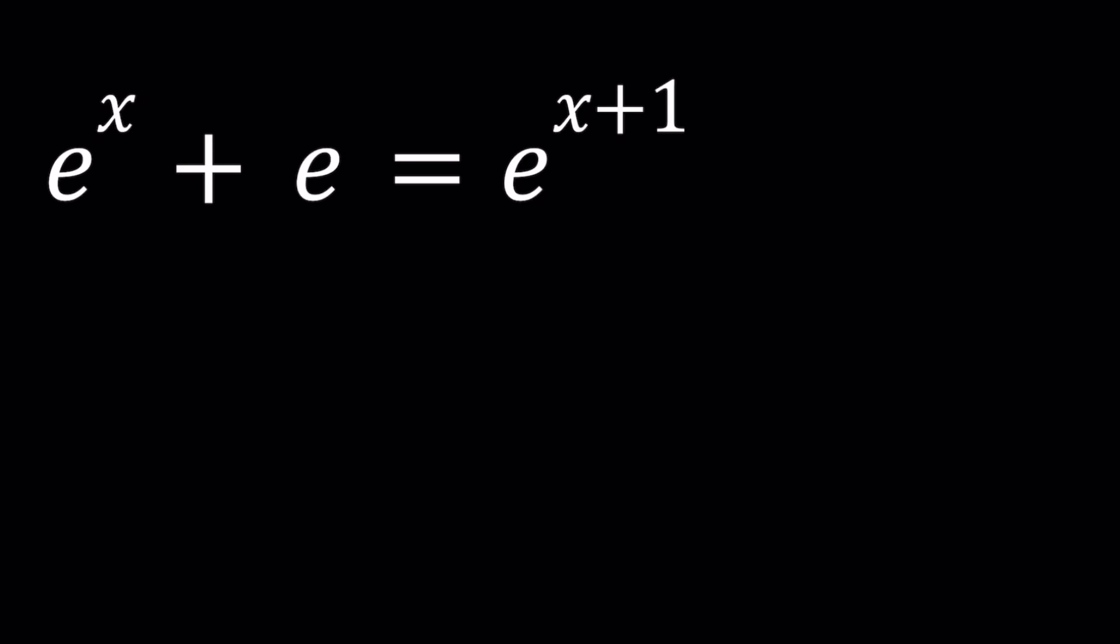We have this equation: e to the power x plus e, which you could also write as e to the power x plus e to the power 1, equals e to the power x plus 1. Can we just add the exponents? Like is there a rule like a to the x plus a to the y equals a to the power x plus y? That would be nice, but this rule in general does not exist because this is a special case.